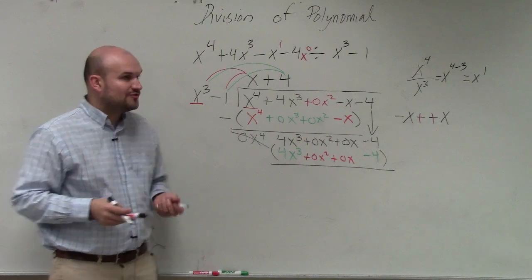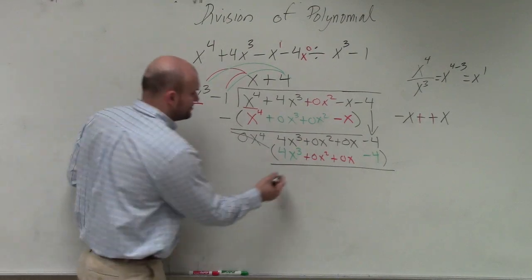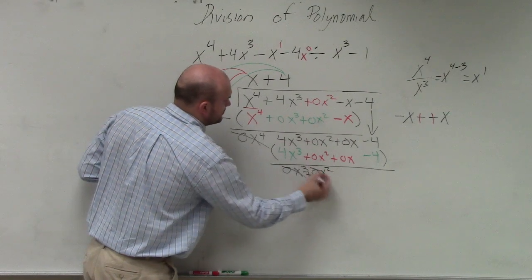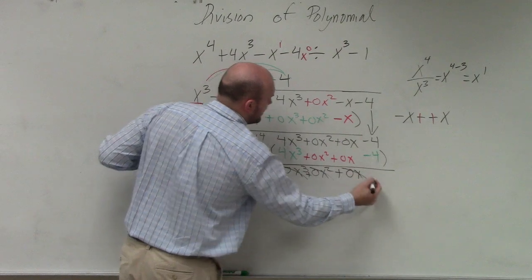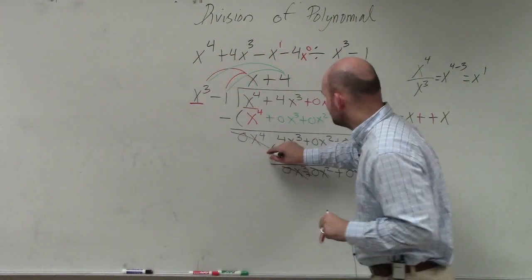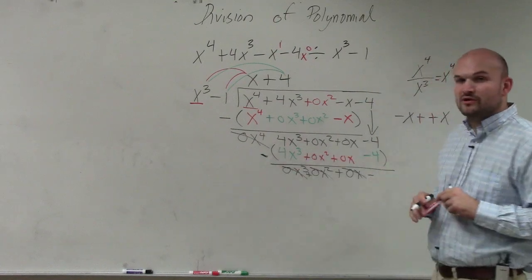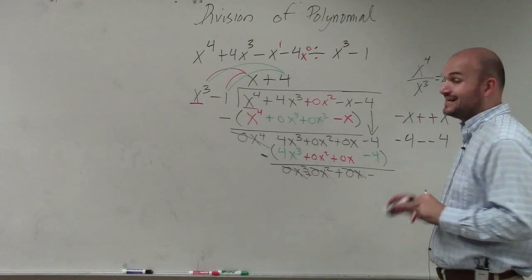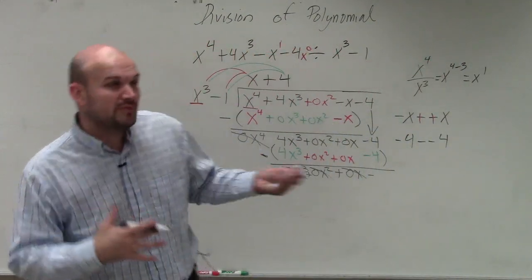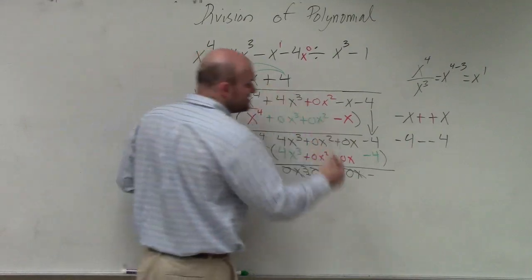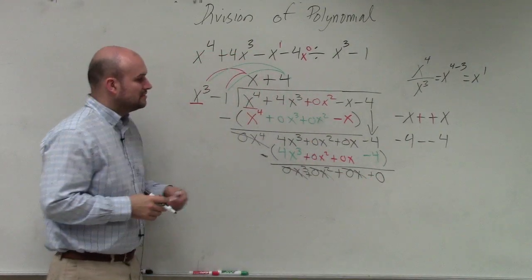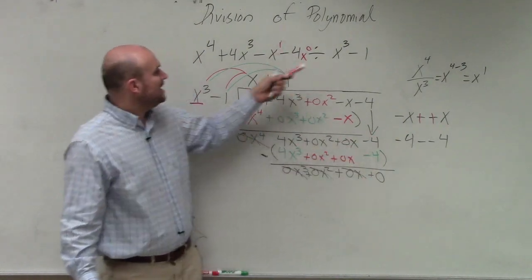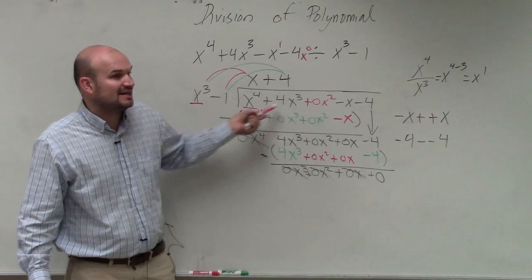And then I subtract my two rows. So 4x cubed minus 4x cubed is 0x cubed. That's 0x squared, that's 0x. And that's negative 4 minus negative 4. Be careful. Negative 4 minus a negative 4. If you're having trouble, write it to the side. That is 0. So that's it. We're done. So we have a remainder of 0. So does x cubed minus 1 evenly divide into this polynomial? Yes. And the quotient is x plus 4.